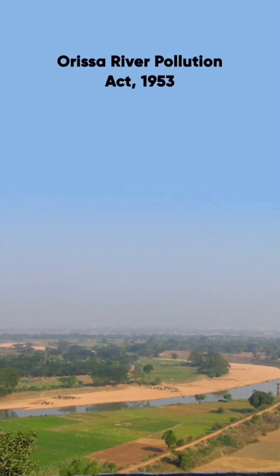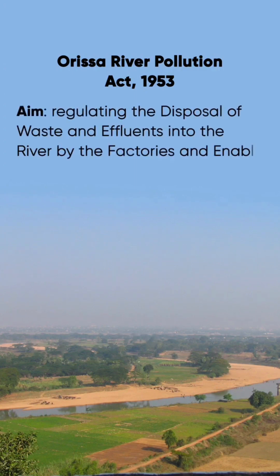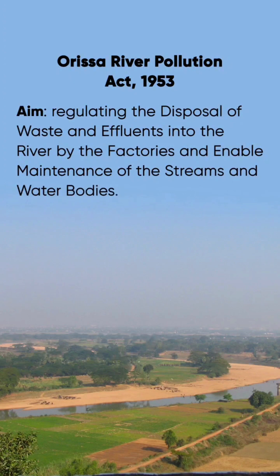Orissa River Pollution Act, 1953. Aim: Regulating the disposal of waste and effluents into the river by factories, and enabling maintenance of the streams and water bodies.